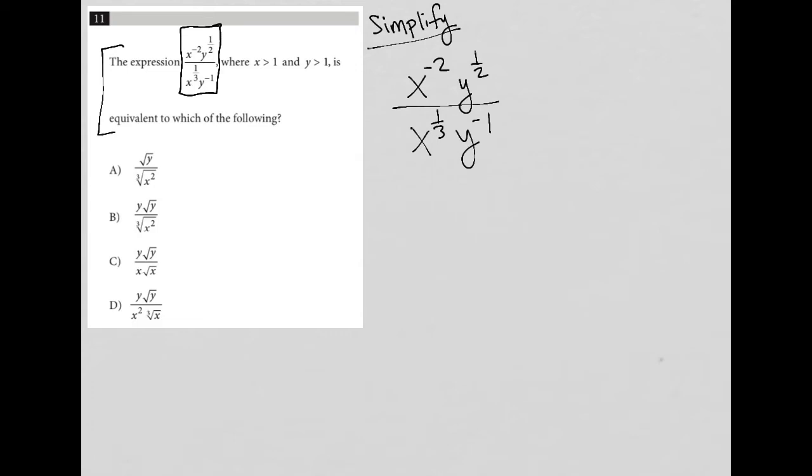Then what I'm going to do in this particular question is notice that the answer choices are all in radical form, which I'm not in currently, and also none of the answers have negative exponents, which I do have.